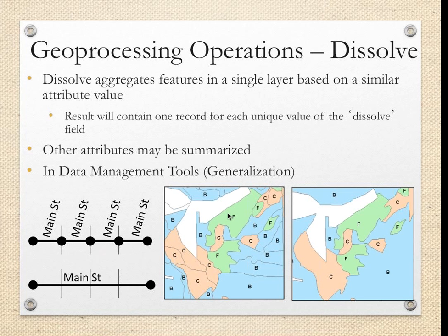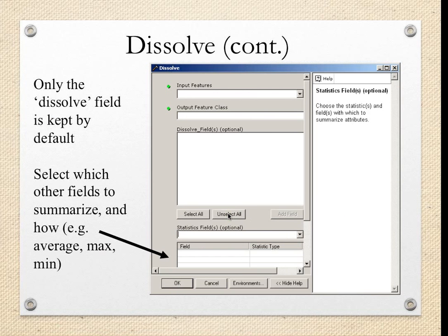The easiest way to access geoprocessing tools is through ArcToolbox, found on the main bar in ArcMap. Depending on which type of ArcGIS you're using, the availability of tools will vary — if you have a student license or a salon version through your municipality, these tools will definitely be available. One last important note is that the result of geoprocessing tools is almost always going to be a new layer on the map, giving you the flexibility to perform analysis and then go back and remove it while still keeping your original feature classes.